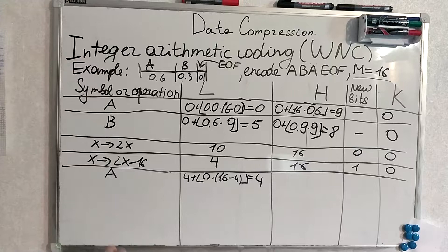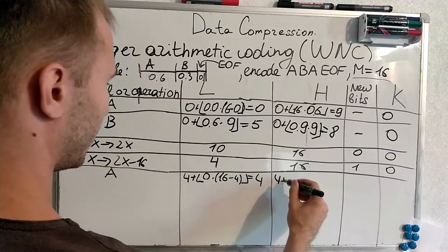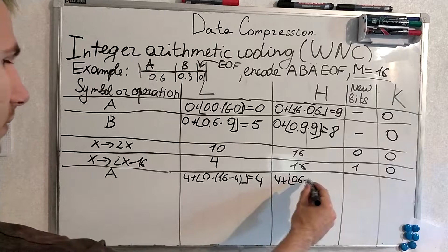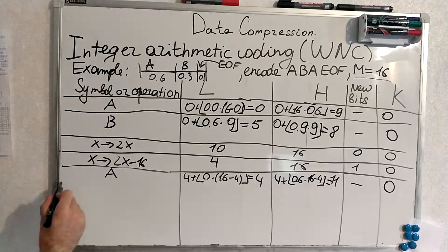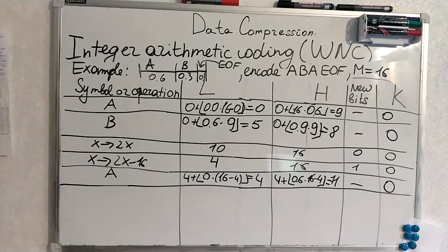Okay. Produce 4 plus 0.6 multiplied by 16 minus 4. I think now it's condition for something.